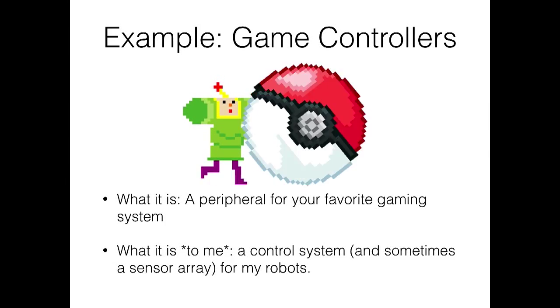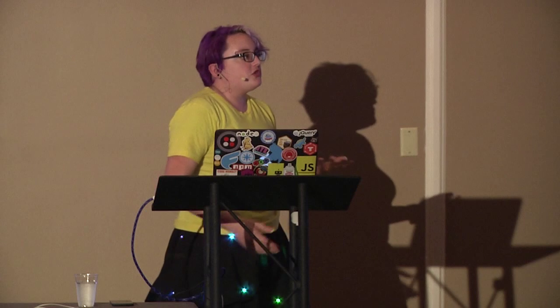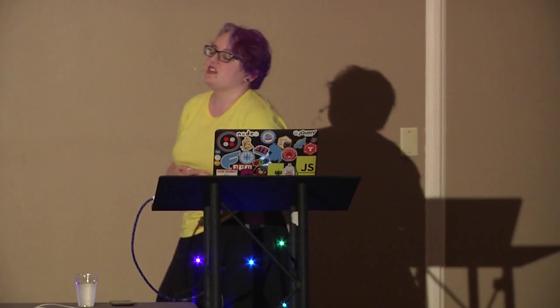Another example that's been around for a while is game controllers — an Xbox controller, a PS3 controller, a Wiimote. We usually think of those as peripherals for gaming devices, but because languages have taken such an interest in hardware, a lot of languages have libraries for these. You can use them not just as direct control systems — there are sensors in a lot of these controllers, especially newer ones. The Wiimote Nunchuck, for instance, has a very accurate accelerometer that's hard to get elsewhere, and it's got a good form factor for hand movement.